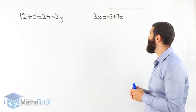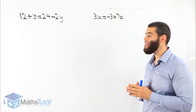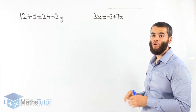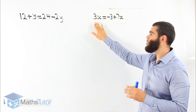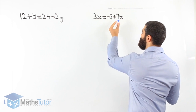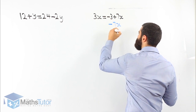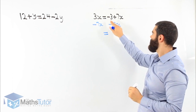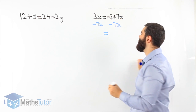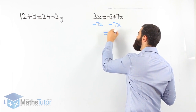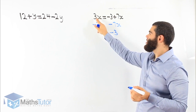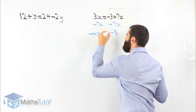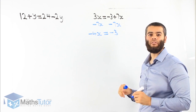3x equals minus 3 plus 7x. We can straight away identify pronumerals on both sides. We want to get rid of the pronumerals on the right and keep them on the left. Basically, minus 7x — what we do to one, we do to the other. 7x take away 7x is gone, we're left with minus 3. And 3x take away 7x — 3 take away 7 — gives us negative 4x. So negative 4x equals negative 3.